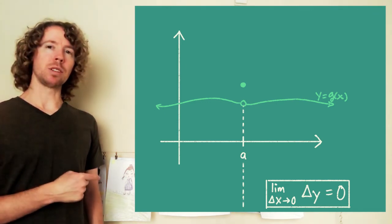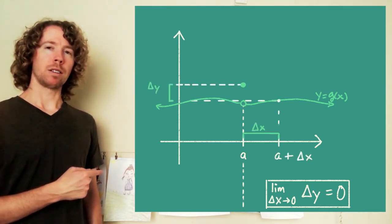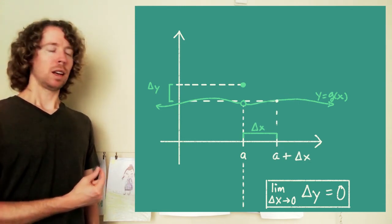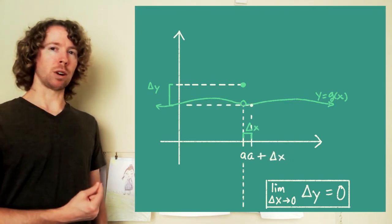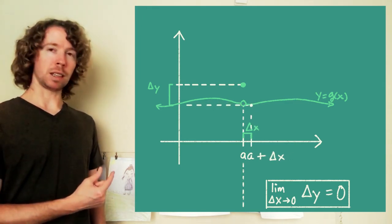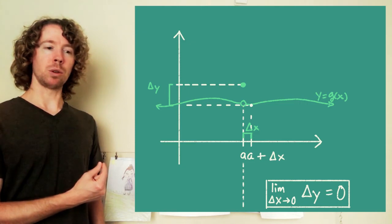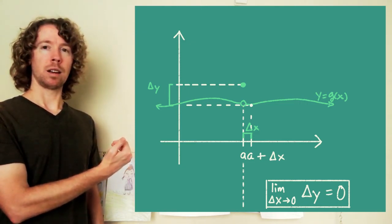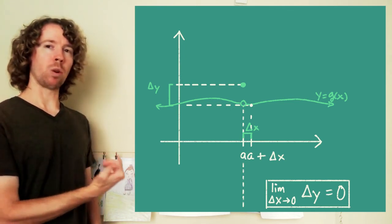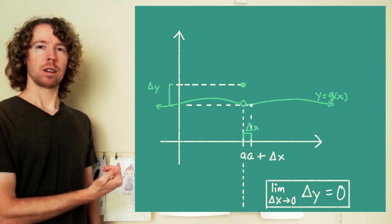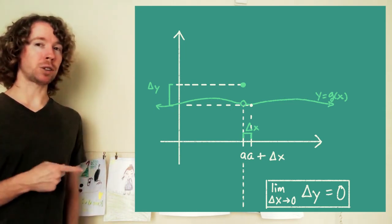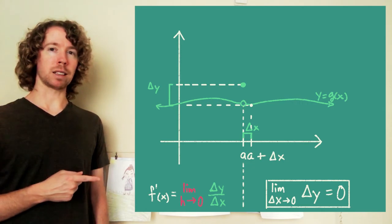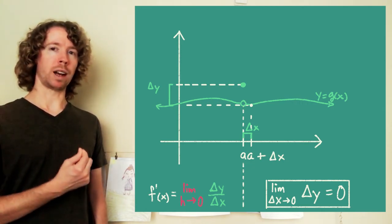If you look at what happens to the change in y for this derivative, as you let delta x, the change in x shrink down to zero, that change in y is not shrinking down to zero. It's limiting to a constant. It's limiting to what the actual y value is there at x equals a minus where the y value where that hole is. So since that delta y is not shrinking down to zero, this limit delta y over delta x as delta x shrinks to zero will not exist.